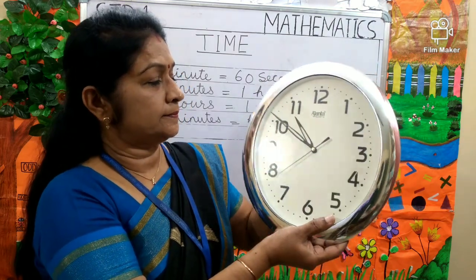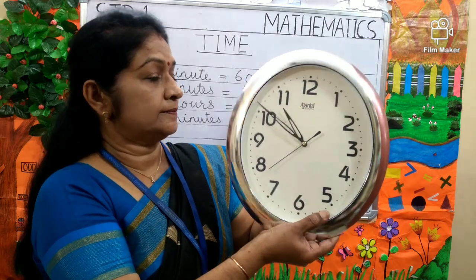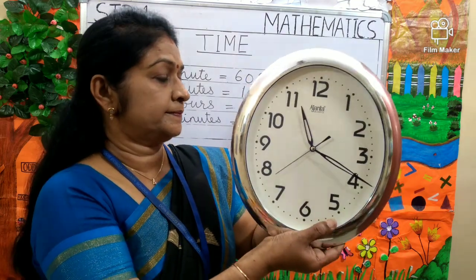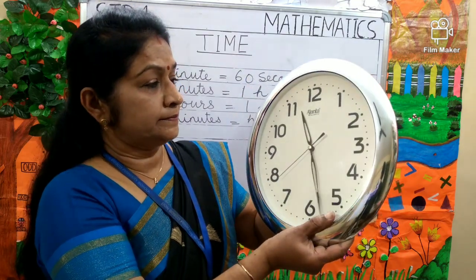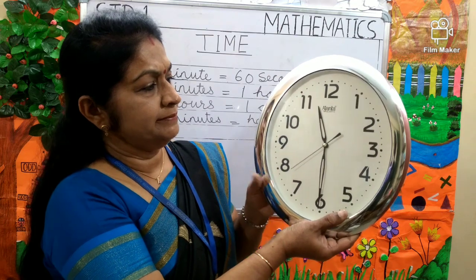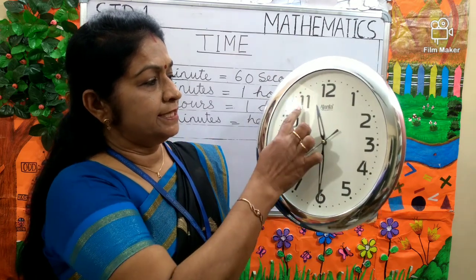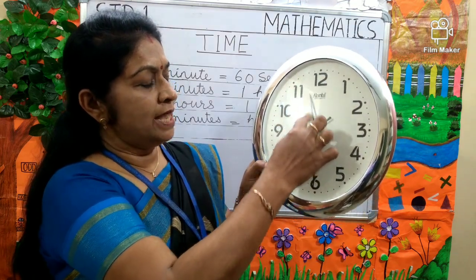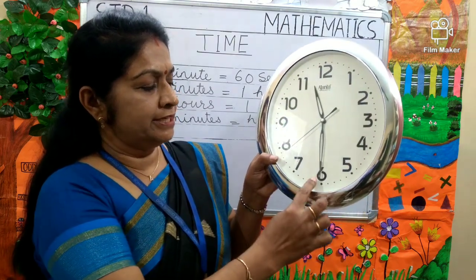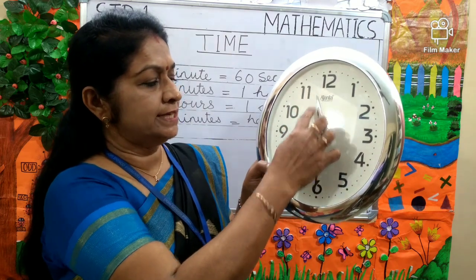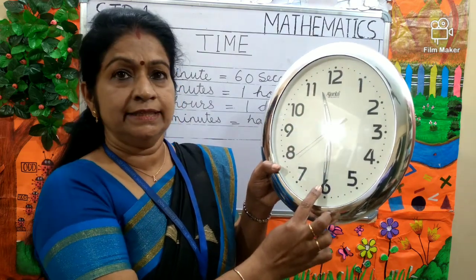11 o'clock. Now can you tell me what is the time? It is between 11 and 12 and the minute hand is on 6. So the time is 11:30.